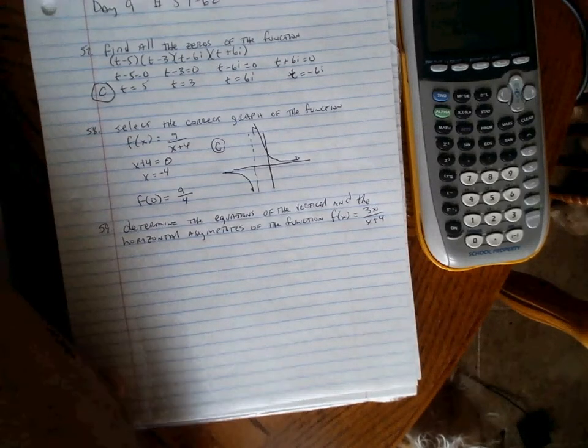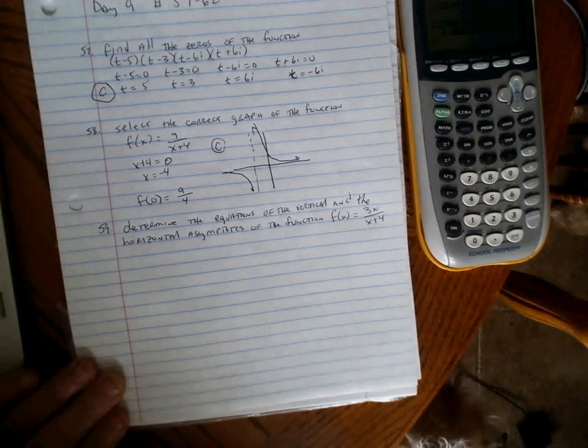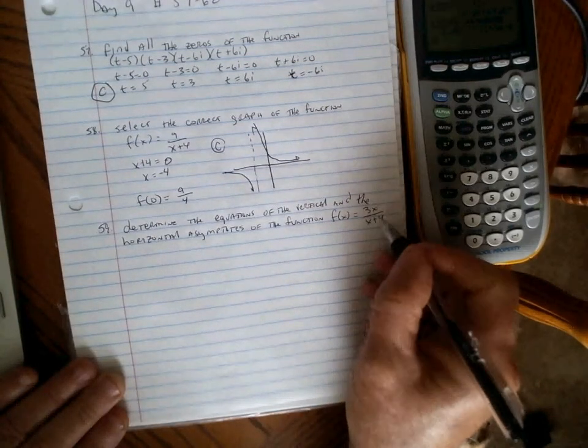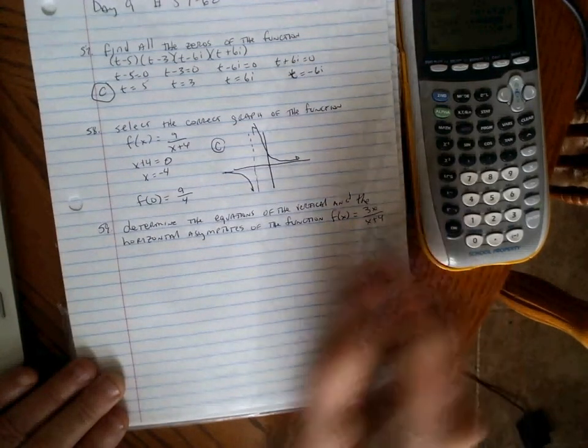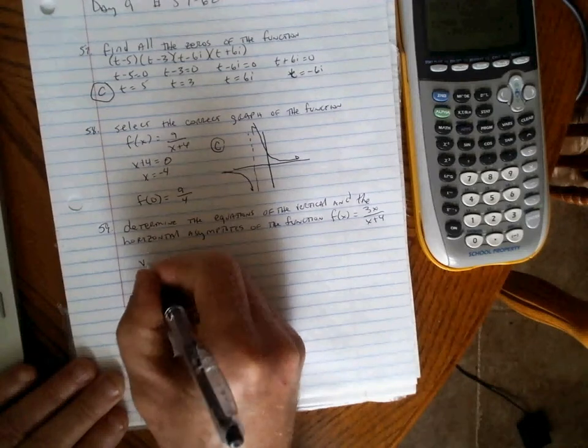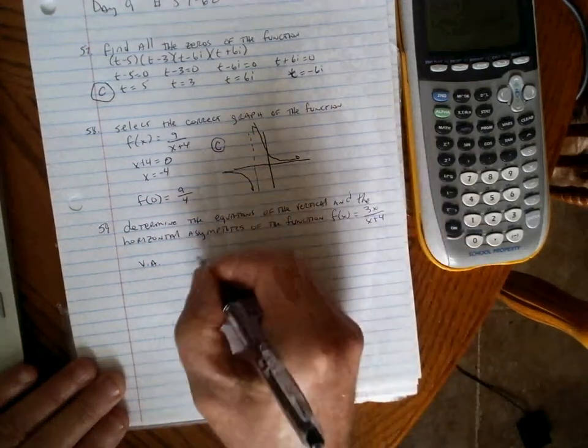Number 59 says to determine the equations of the vertical and horizontal asymptotes of f(x) = 3x/(x+4). Again, vertical asymptotes happen when the denominator equals zero.